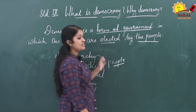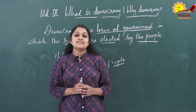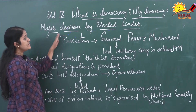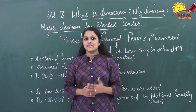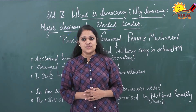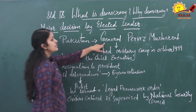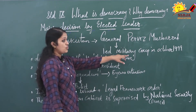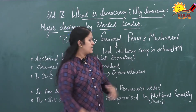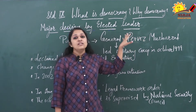So these are the questions which arise in our mind. Let us consider all these questions with the help of some examples. Major decisions by elected leaders. Now we will see the case of Pakistan and find out if Pakistan is a democratic or non-democratic country. In Pakistan, General Pervez Musharraf led a military coup in October 1999. General Pervez Musharraf is himself a military general.